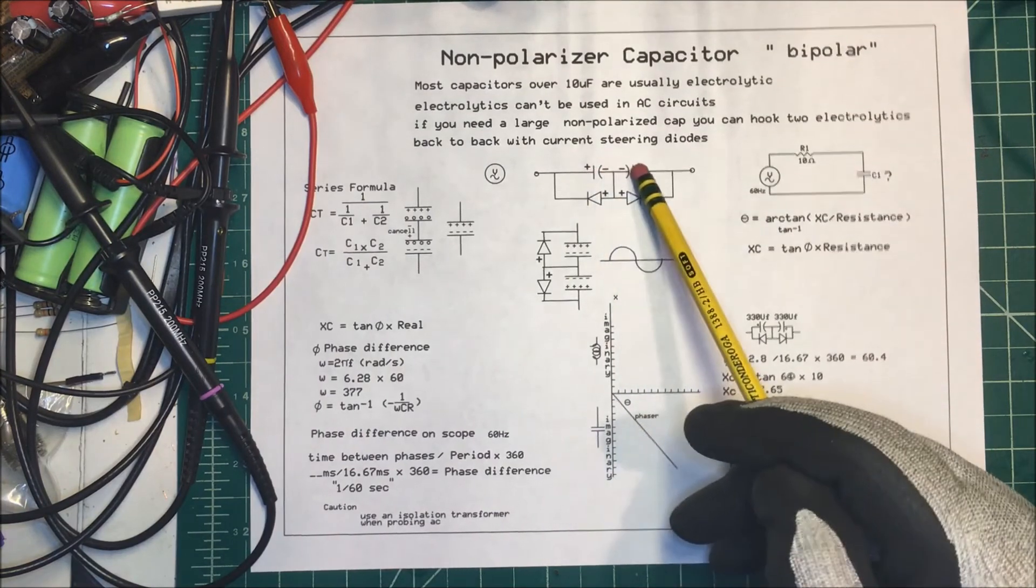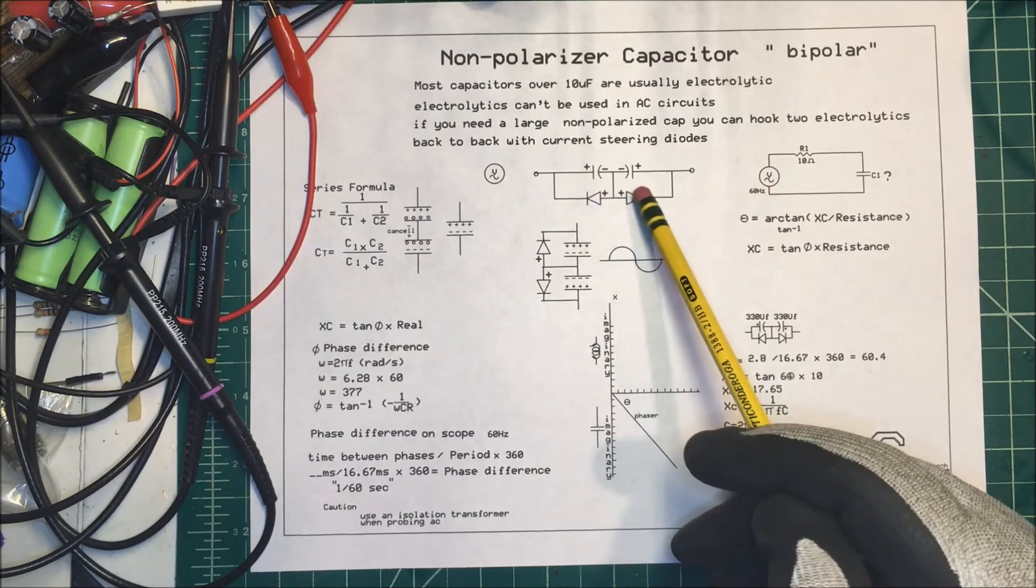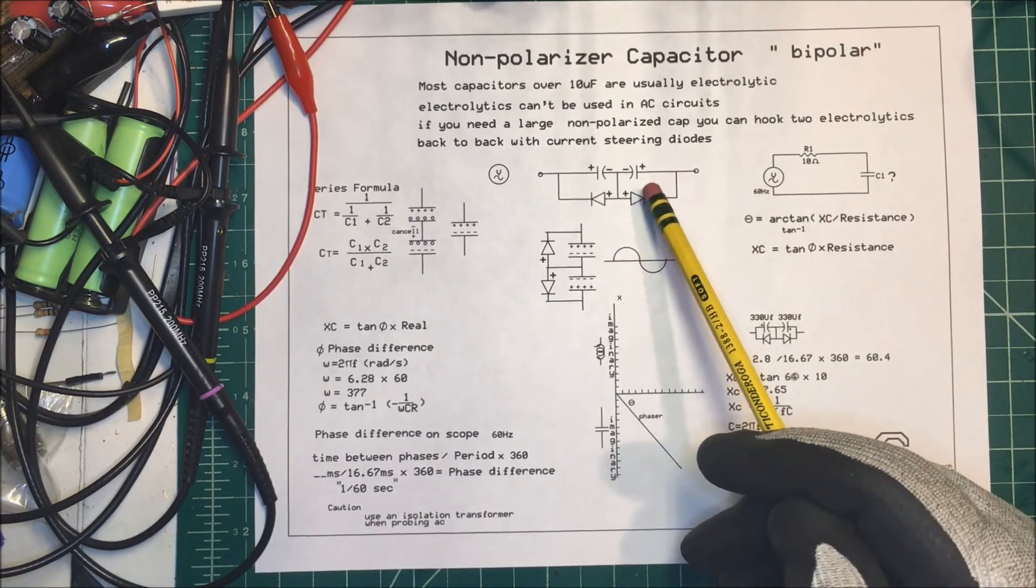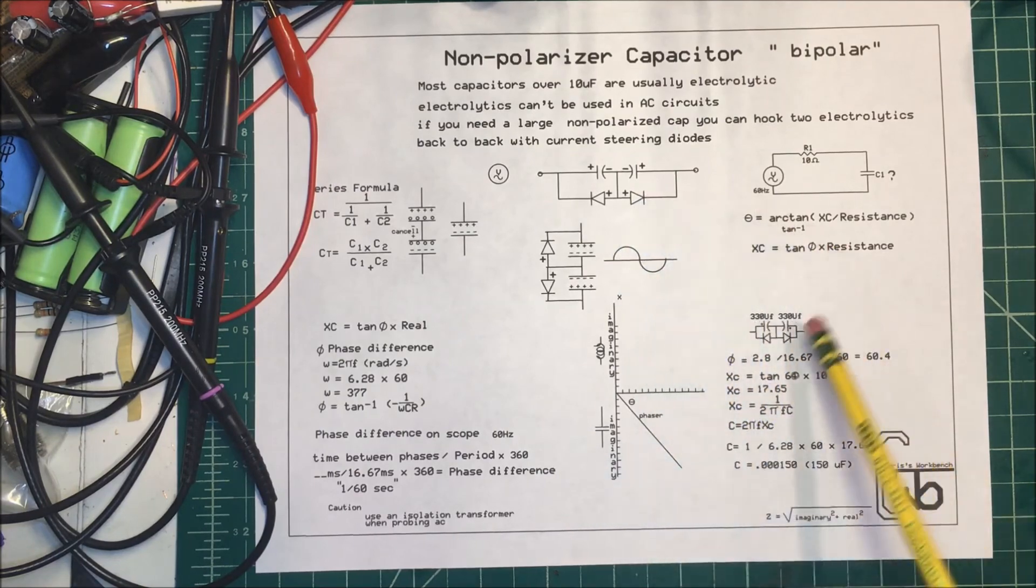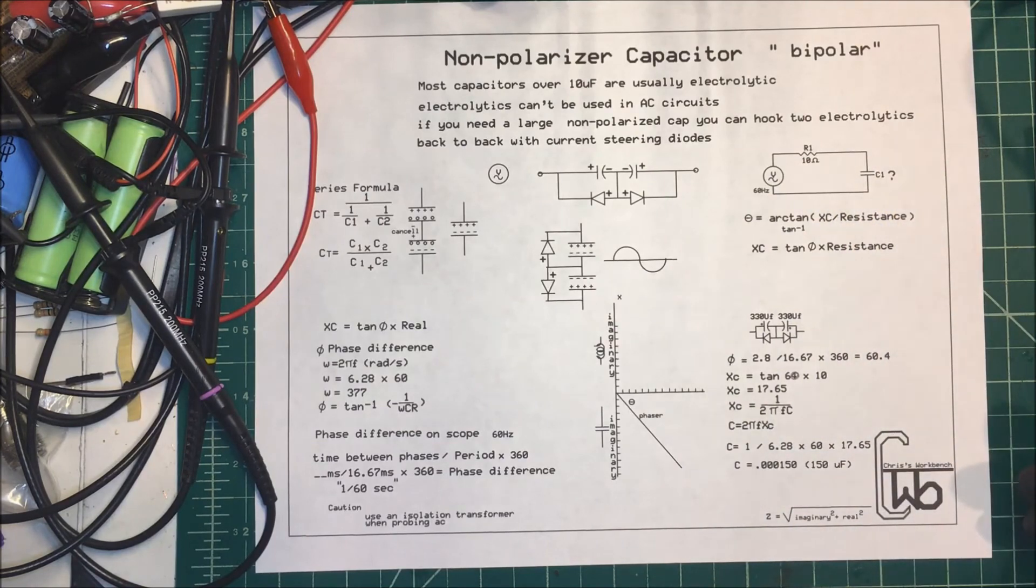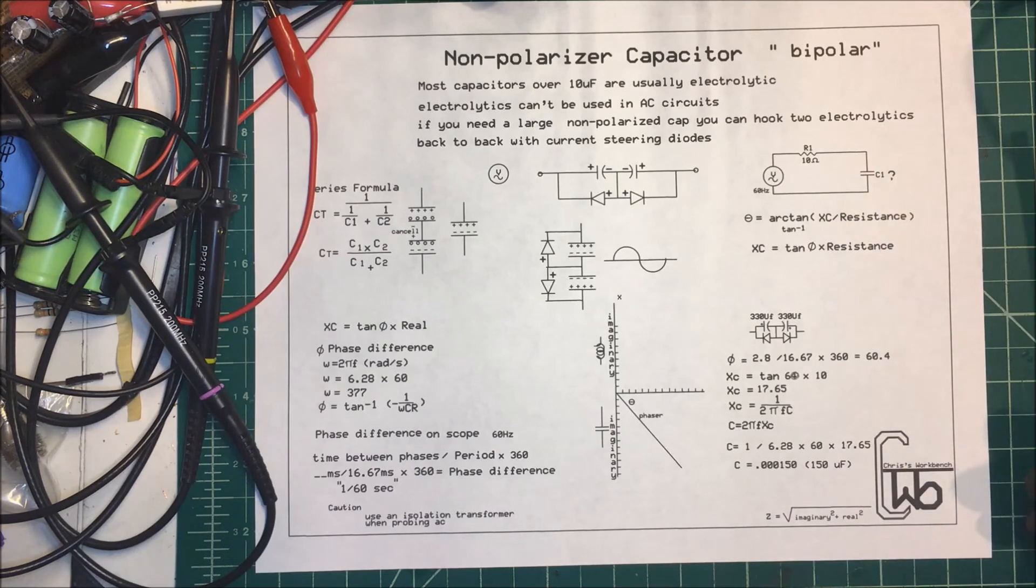These voltages have to be good enough to take your peak voltage, and the diodes also have to have enough voltage rating and a current rating to take that. You can find your current through your capacitive reactance on the circuit here. Anyway, that's a non-polarized capacitor made out of two electrolytics. Thank you.